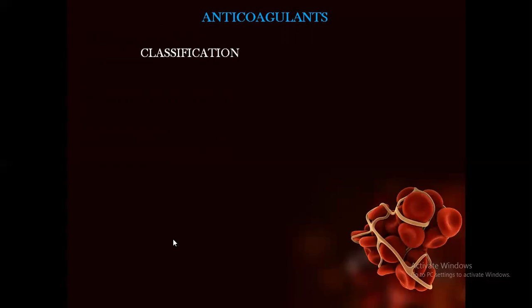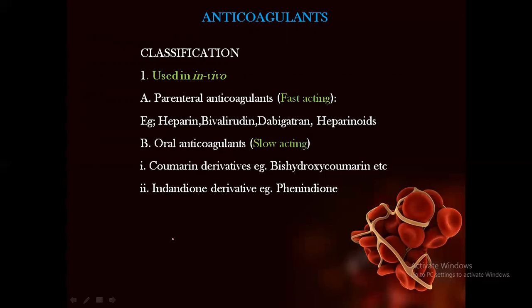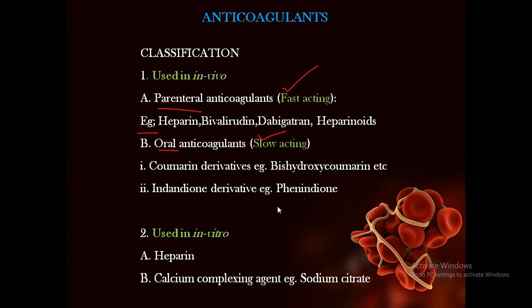Classification of anticoagulants: first, drugs used in vivo include parenteral anticoagulants which are fast acting — examples are heparin, bivalirudin, dabigatran, and heparinoids. Oral anticoagulants are slower acting — examples are coumarin derivatives, bishydroxycoumarin, and indandione derivatives such as phenindione. The next category is those used in vitro, specifically for blood tests in pathology labs — examples are heparin and calcium-complexing agents such as sodium citrate.